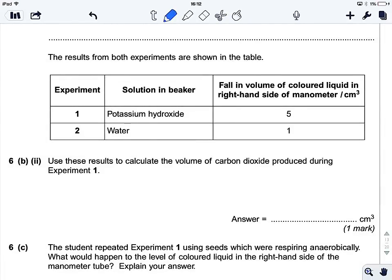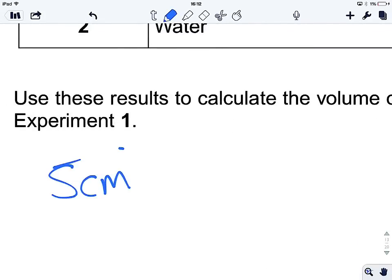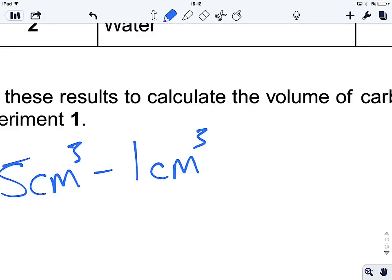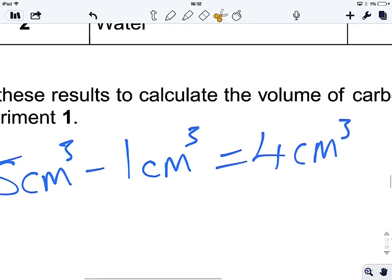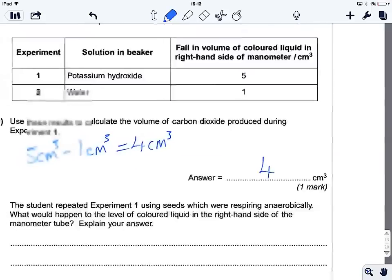Well, surely that's just the difference, because water is a control, and it allows us to compare. So, all we're going to have to do is do five centimetres cubed minus one centimetre cubed. Sorry, I'm showing my working just to be safe, in case I go wrong. And that equals four centimetres cubed. So, four centimetres cubed is our answer. And we don't even need to give the units, because the examiner has very kindly written them for us. Nice.